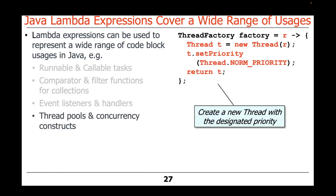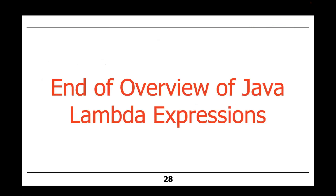Yet another example: we can use lambda expressions for thread pools and other Java concurrency constructs. Here we're creating a lambda expression that will make a thread factory that creates a new thread with a designated priority — in this case, the normal priority. These are all different ways you can use lambda expressions, and we'll look at many more examples as we go through this set of lessons. That's the end of the overview of Java Lambda Expressions.